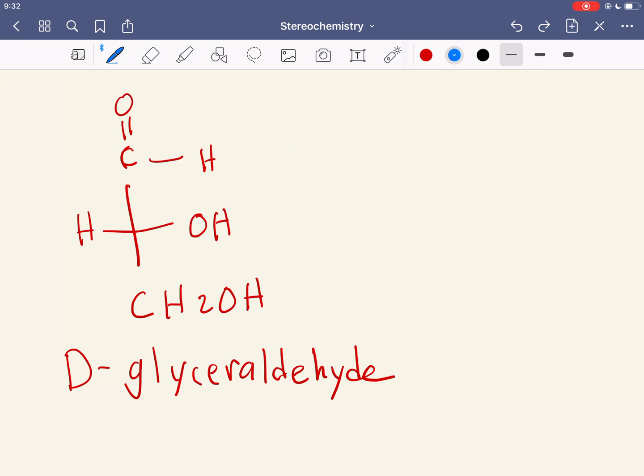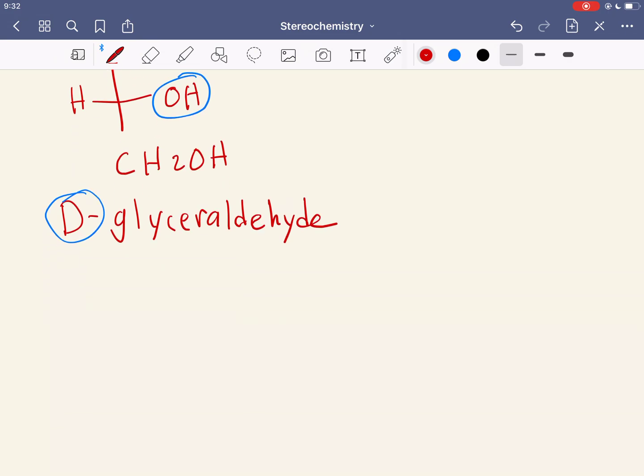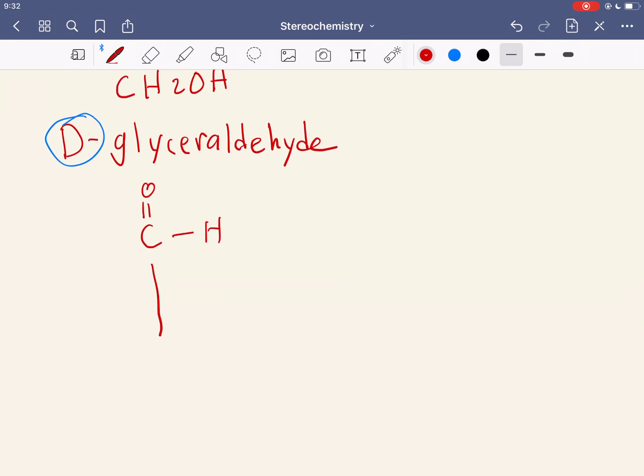It's D if, between the things that are on the left and right, if the one that's high priority is on the right. So because this is on the right, this is D. Whereas if I was to draw the L version of this, I'll just draw it down here. Here, you can guess that it's going to be on the left. Hydrogen CH2OH. This is the L form of it.